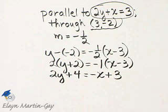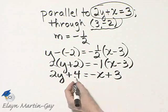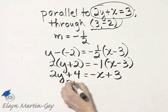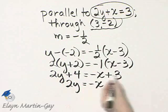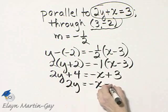Now again, we want to write it not in standard form, but using function notation. That means we need to solve this equation for y. So I'll subtract 4 from both sides, and I'll have 2y is equal to negative x, 3 minus 4, that's negative 1.